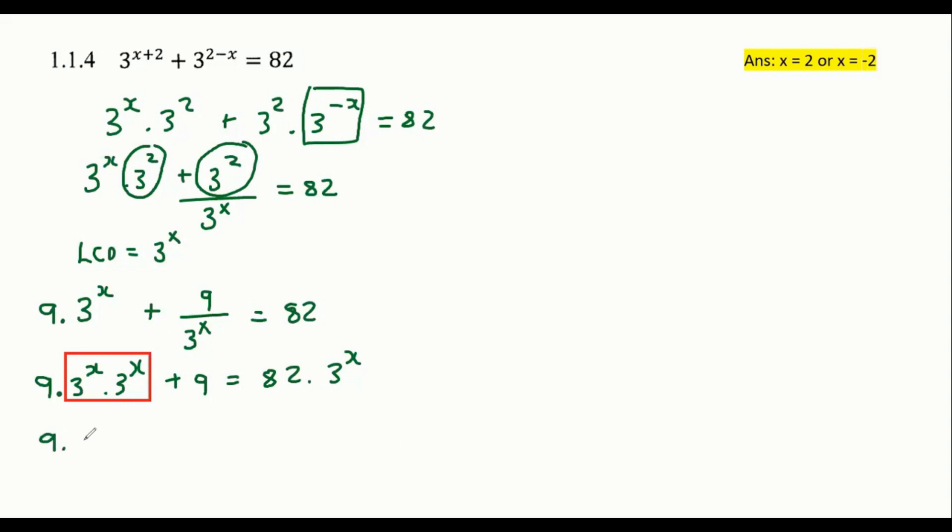And so that's going to become nine times by three to the power of two X plus nine equals to 82 times three to the power of X. Now all of a sudden we can identify a trinomial. How come? Because here we've got a three to the two X and here we've got a three to the X. So because the one is double the other, that is the definition of a trinomial.